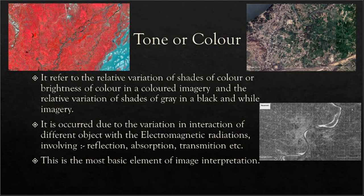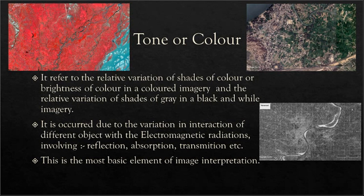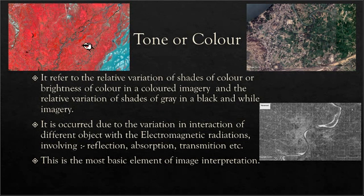Coming to tone or color — as you can see in the given imageries, there is a variation in the shades of color. This variation, or relative variation of shades of color in colorful photographs or imageries, shows the brightness of color in colored imagery and the relative variation of shades of gray in black and white imagery. Here you can see a black and white imagery with different shades of gray, also called the tone of the imagery. There is green and other grayish patches, and in the FCC imagery there is also a variation of color.